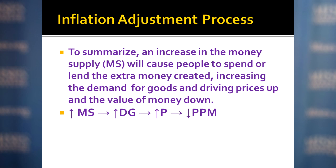To summarize the inflation adjustment process: an increase in the money supply causes people to spend or lend the extra money, and the person who receives it will spend it — they don't want to pay interest and just hold the money. That new money spent increases the demand for goods. Everybody rushes out and spends it, driving prices up, which inversely forces the value of money downward. In symbols: money supply goes up → demand for goods increases → price level rises → purchasing power of money falls.